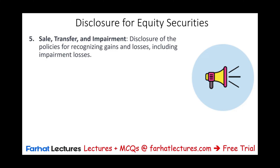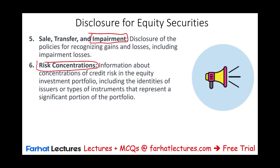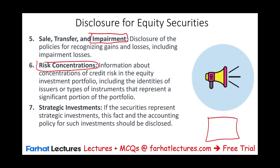We also have to show any sale, transfer, and impairment — disclosing the policies for when we sell and how we report it. When we transfer from one category to another, we have to disclose this. We must also disclose our policy for impairment — when the investment loses value, especially when it's permanent. We also need information about concentration of risk in equity investments. If we have a large portion of stocks in technology, we have to disclose this so investors know there's high risk of exposure to that industry. If we have any strategic investment — bought to maintain a relationship with a company we work with — this fact should be stated as well.